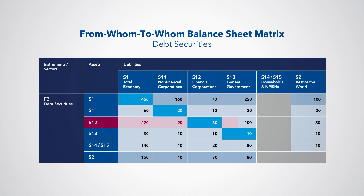Overall, the largest holders of debt securities were the financial corporation sector, 270 units, of which their biggest holdings were government debt securities. Similarly, of the total holdings of the rest of the world, 150 units, general government debt securities were the preferred investment vehicle, at 80 units. The from-whom-to-whom table shows the total debt securities issued by residents equals total holdings, 450 units, and 150 units of resident debt securities held by non-residents. Note also that non-residents issued 100 units of debt securities which were held by resident sectors. We could construct a similar matrix for debt securities with additional characteristics such as the currency of issuance and/or maturity.